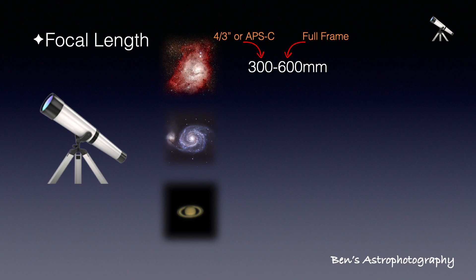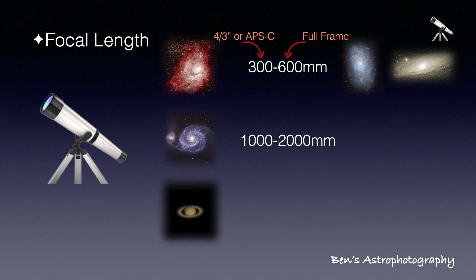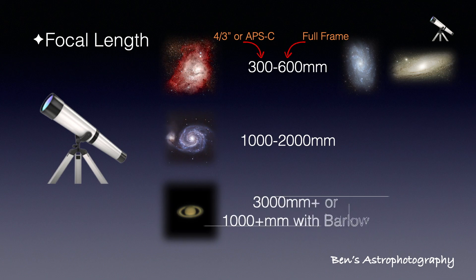If you are interested in nebulae, M31 and M33 will be a bonus for you — both are galaxies, but both are huge. For other galaxies, most of them are sized 10 arcminutes or less. A focal length of 1000 to 2000 millimeters will be nice.